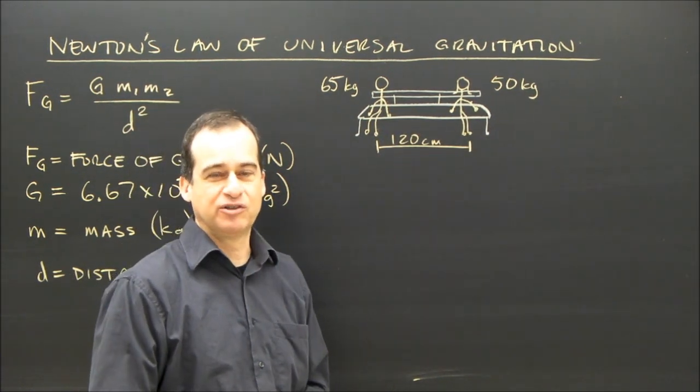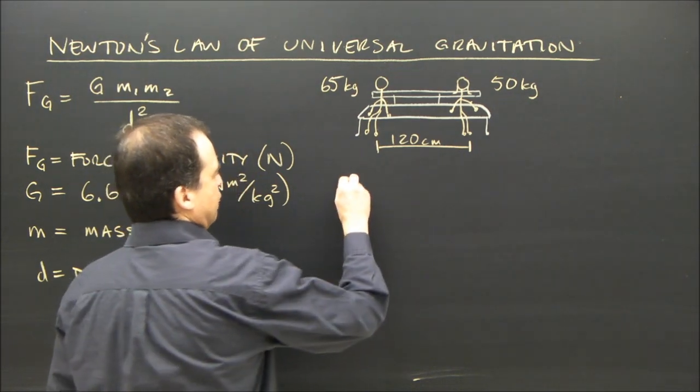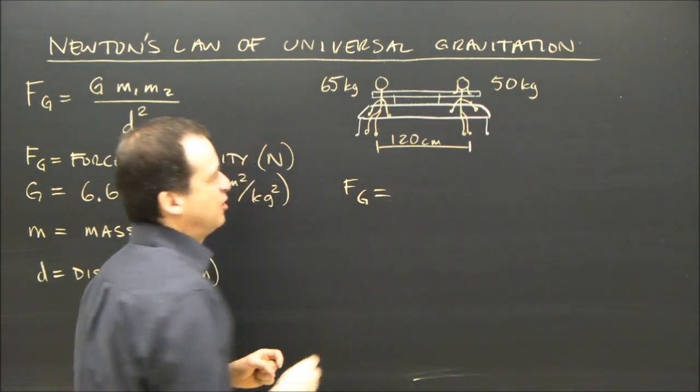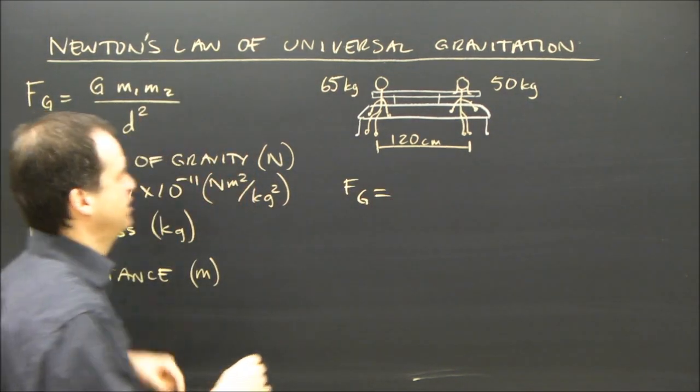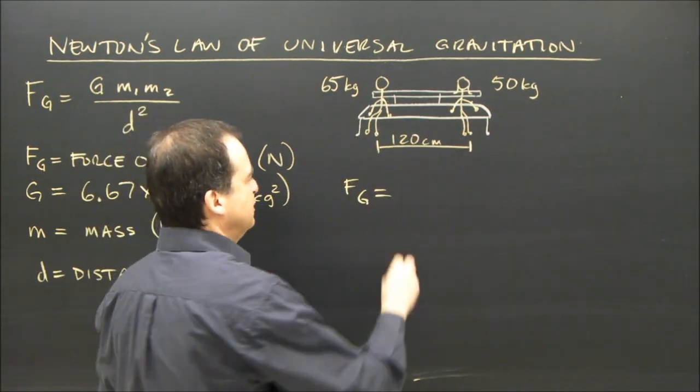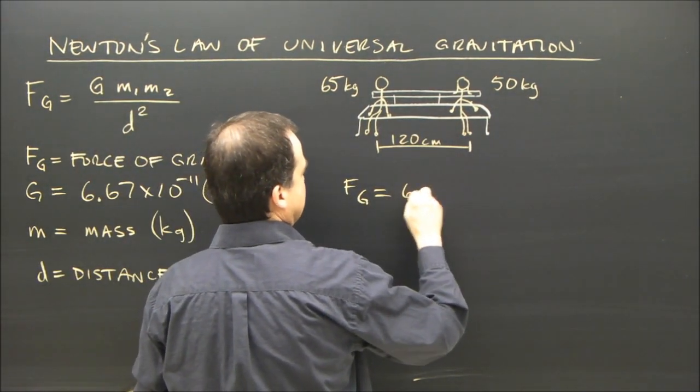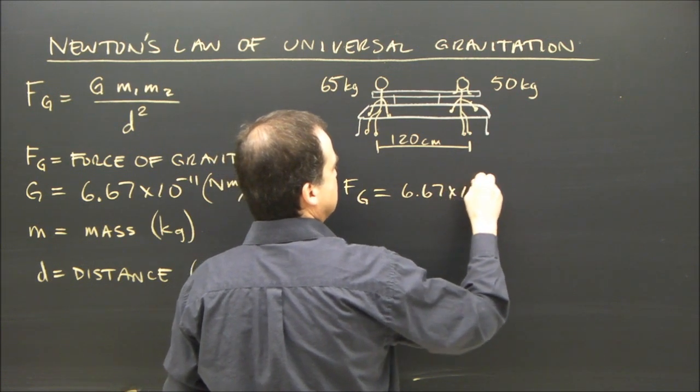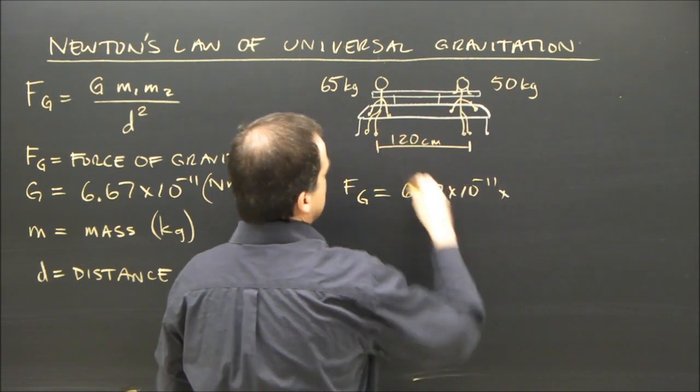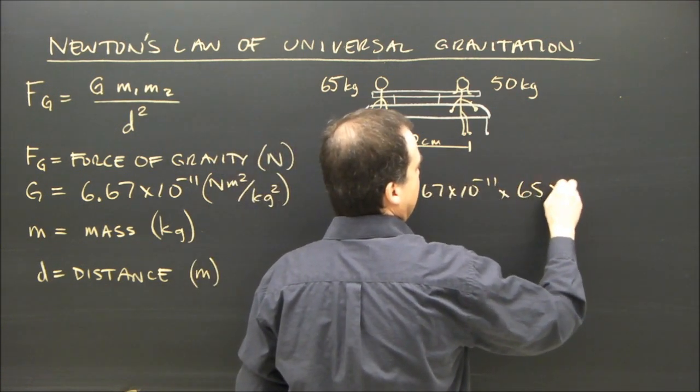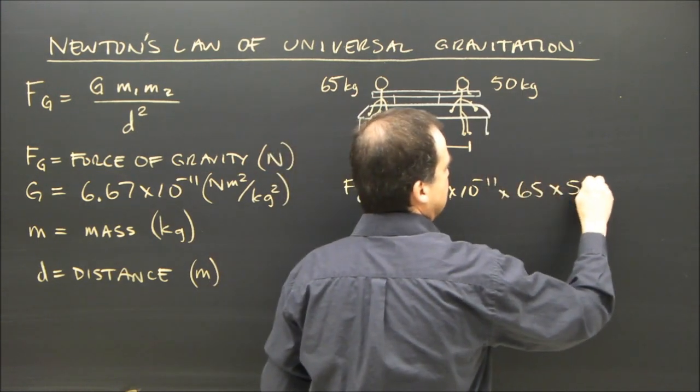The distance between them is 120 centimeters. So our formula FG is equal to GMM over D squared. I'm going to call the boy mass 1 and the girl mass 2. So I got 6.67 times 10 to the minus 11, times the mass of the boy, 65, times the mass of the girl, 50.